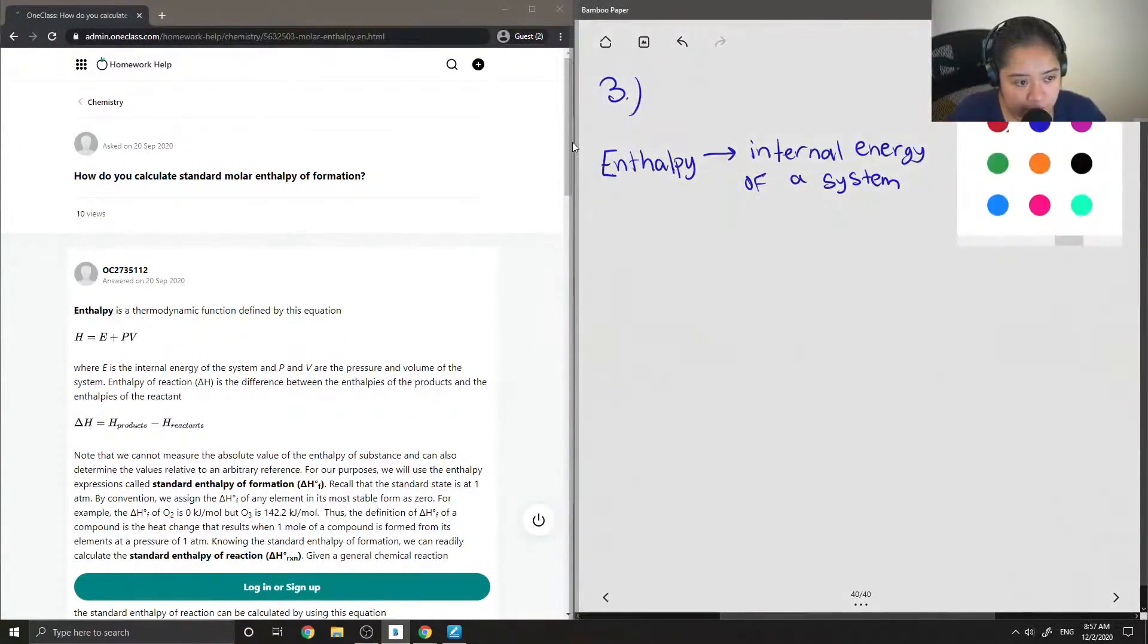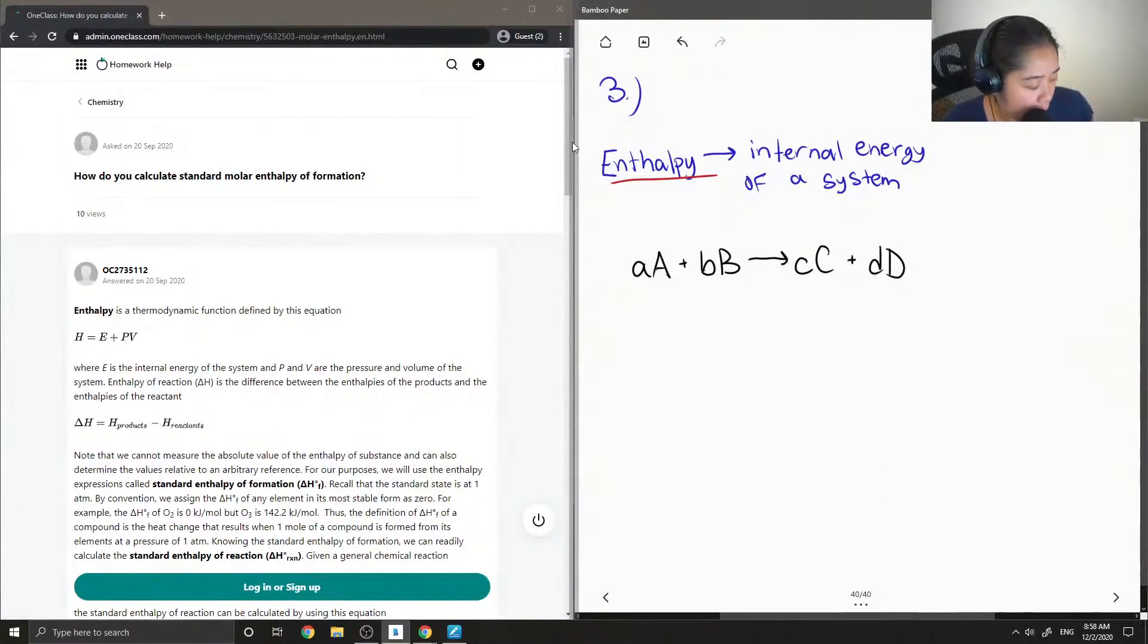So when we want to find the enthalpy of a reaction, it can be any reaction like a combustion reaction, or in this case, enthalpy of formation. Let's say we had just a balanced chemical reaction. So the lowercase letters are the coefficients that are used to balance the reaction, and the uppercase will be that element.